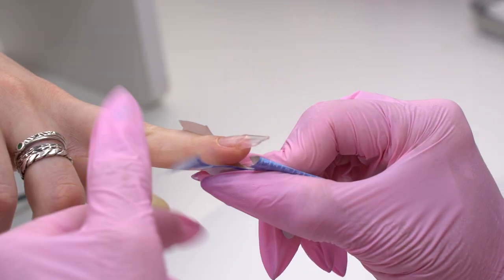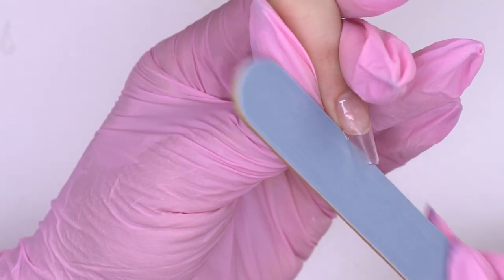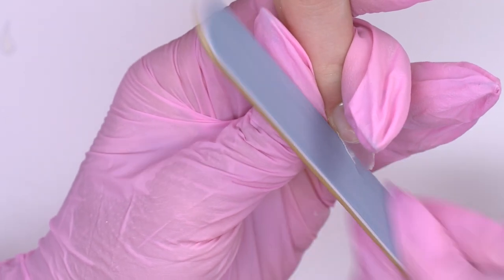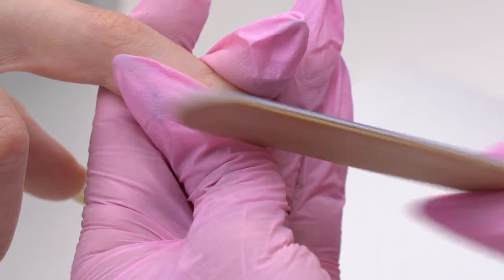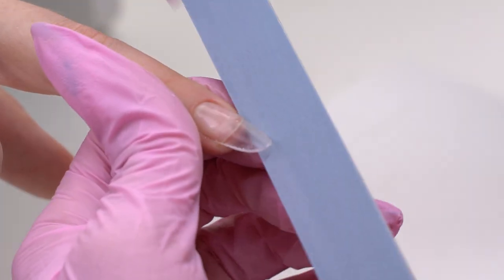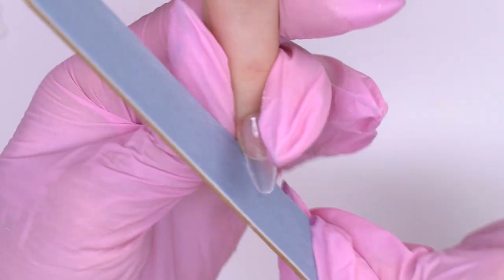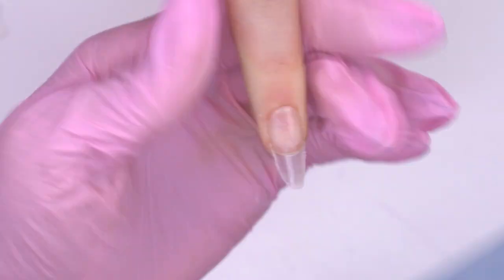To lift up the curved tip, I place the file under the nail plate and file a straight line. Lower parallels get lifted up and look straight. I file an almond shape on the tip from the top view.